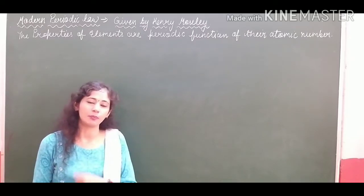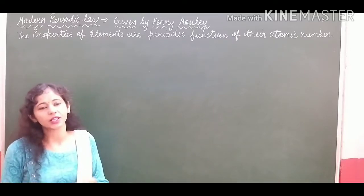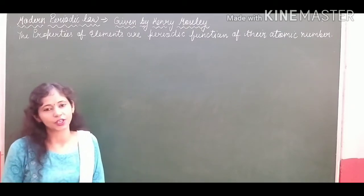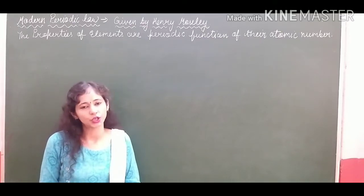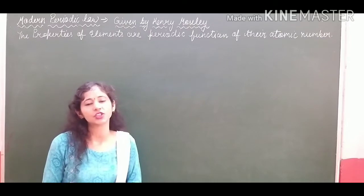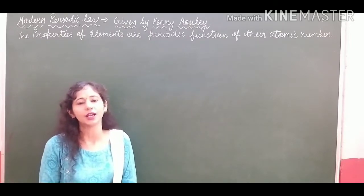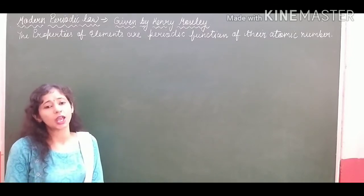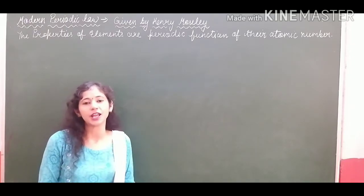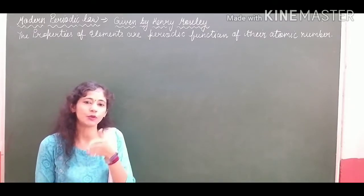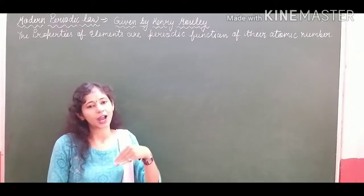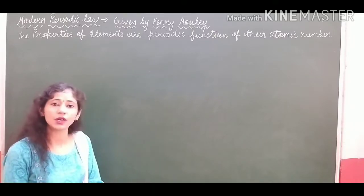As I had taught you in the previous sessions, there were a lot of drawbacks in the Mendeleev periodic table and earlier attempts at classification of elements. Mendeleev chose to arrange all the elements in increasing order of their atomic masses. But as I taught you in the previous session, he put some mistakes when placing some heavier elements — heavier elements were put before lighter elements. So this was the wrong order.